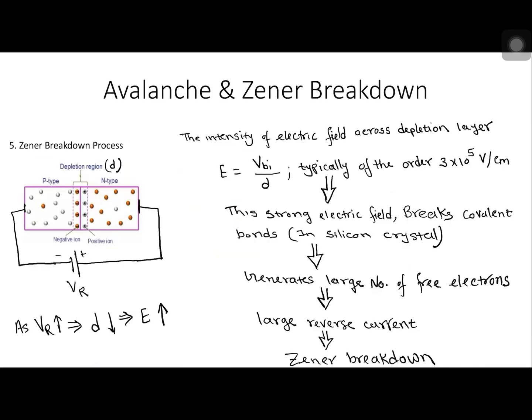Next is Zener breakdown. Zener breakdown occurs in a heavily doped PN junction with a narrow depletion region under reverse bias. Due to this narrow depletion region, the intensity of the electric field across the depletion region is quite high, and that intensity is given by this formula.